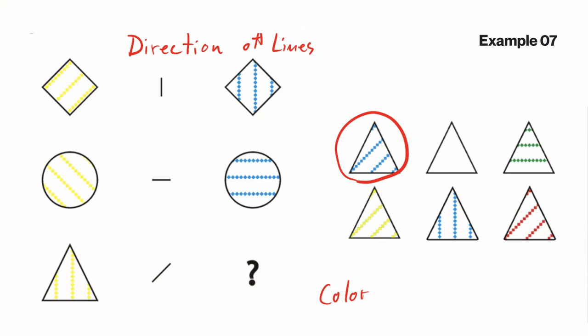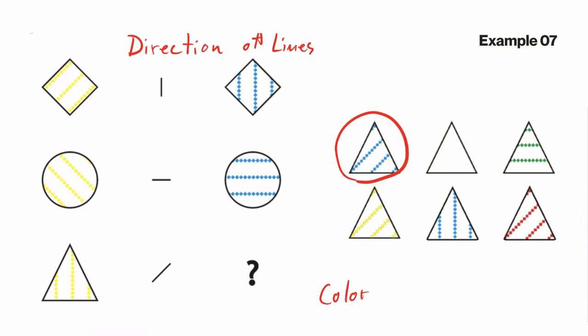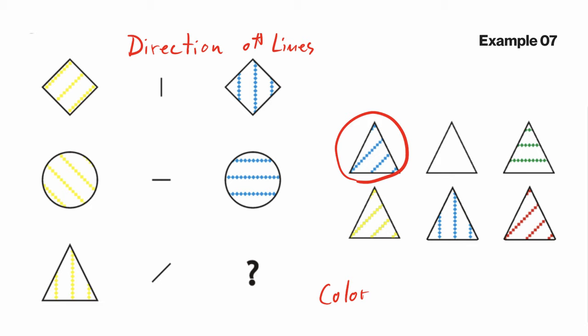Example seven is about rotation, colors, and shapes — three components, making it one of the harder examples. The middle dash or line in the center of the shape indicates which direction the pattern inside will face. On the first shape the pattern is one way; the middle element tells you it rotates to a new direction, and so on for each row. The important thing is that the first column has yellow and the last column has a blue pattern, so we're searching for something with a blue pattern in the correct direction. That identifies the solution.